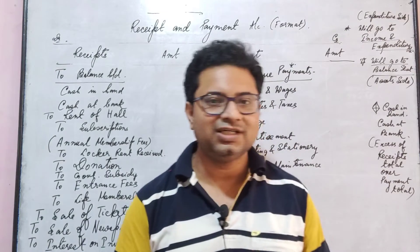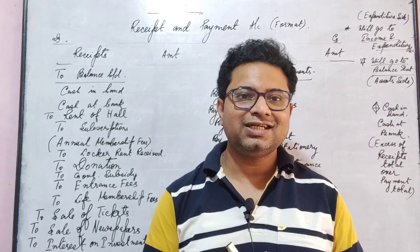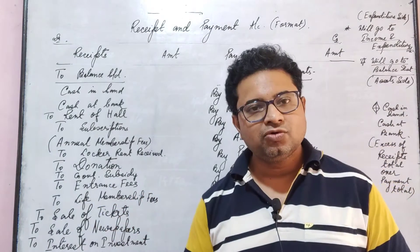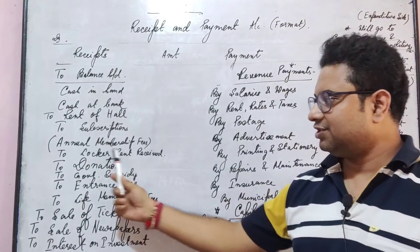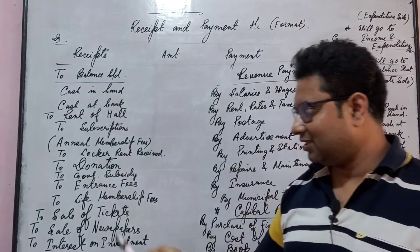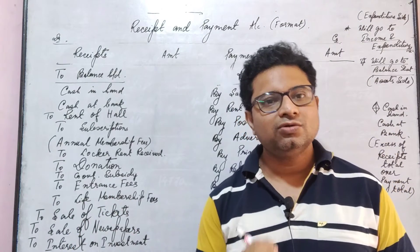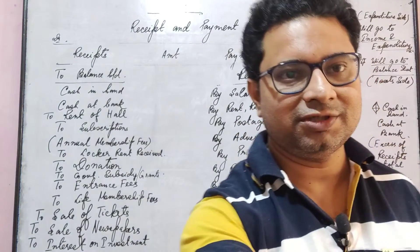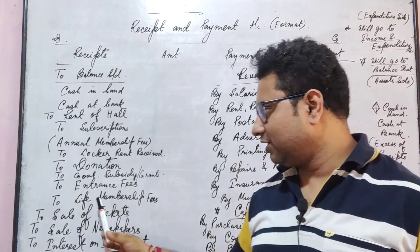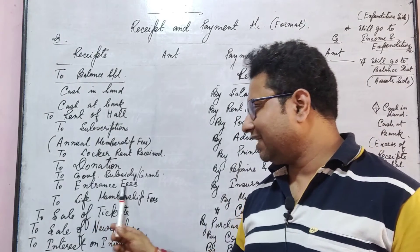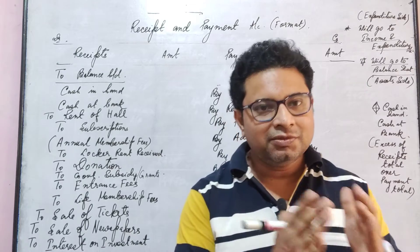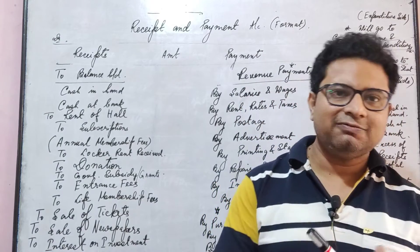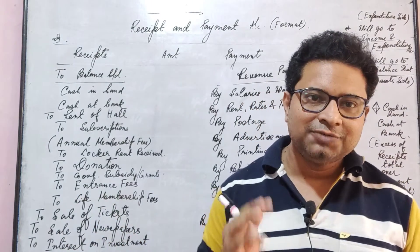Locker rent received — these organizations have locker facilities which members can use at a nominal charge. The charge they collect is called locker rent received. These organizations also get donations from outsiders — donated money. You can also see government subsidies and grants. In terms of entrance fees, when someone comes to a club for the first time, they pay an admission fee, also called entrance fees. The entrance fees are shown on the receipt side.